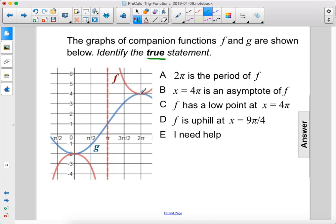2π is the period of f. This is false because you can see that at 0 we have a maximum, so the period will be the next point where we have a maximum, which is actually going to be at 4π.